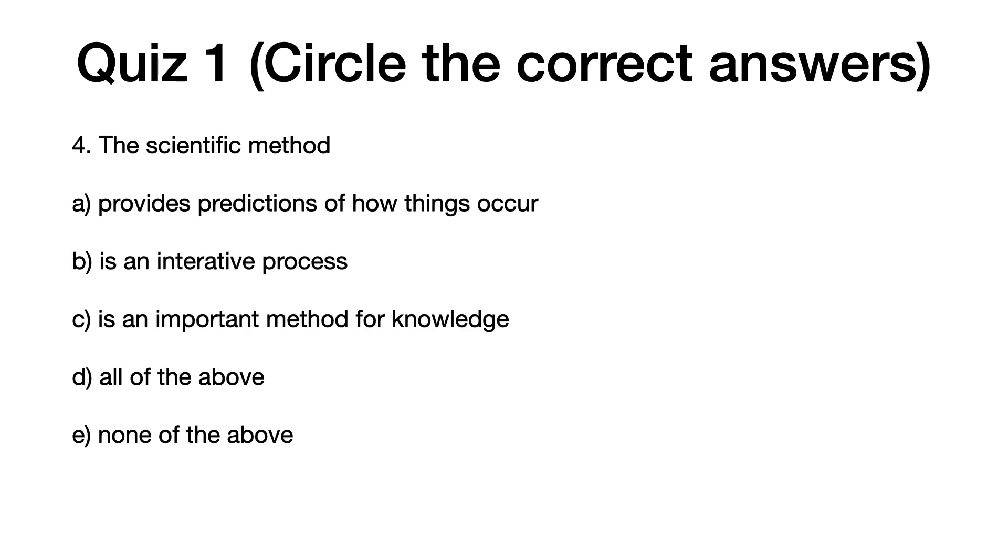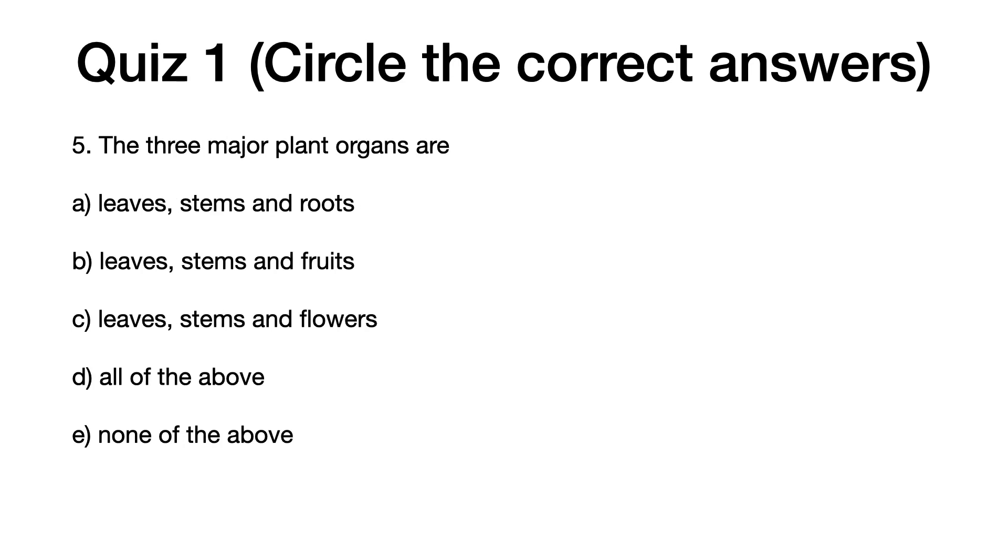Question four: The scientific method a) provides predictions of how things occur, b) is an iterative process, c) is an important method for knowledge, d) all of the above, e) none of the above.